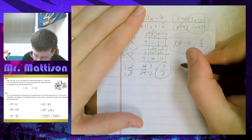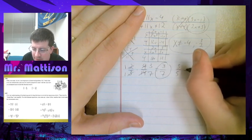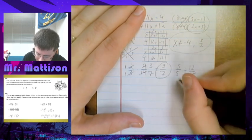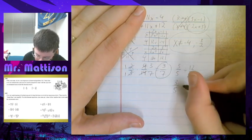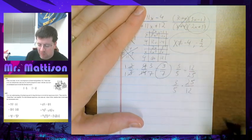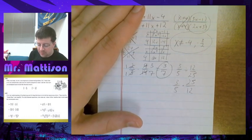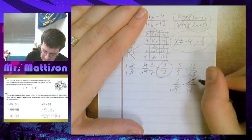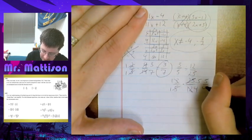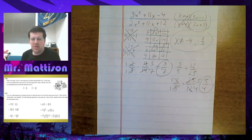If I try that same thing for 3 fifths divided by 12 twenty-fifths — remember when we divide, we multiply by the reciprocal. So we can really treat it like 3 fifths times 25 twelfths. Now that we're multiplying, we can reduce diagonally. I get 1 and 5, 1 and 4, and then we get 5 fourths as our solution.